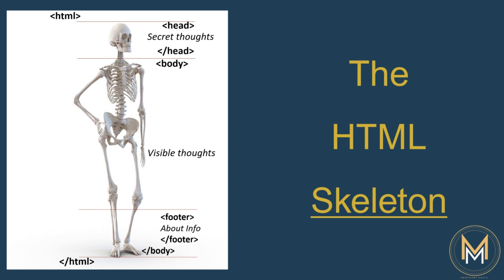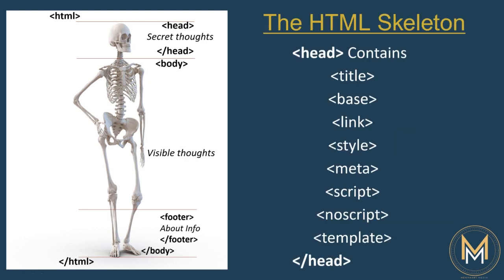So let's take a look at our skeleton. The skeleton has two main parts to it: one being a head section, one being a body section. In the body are stored all the visible parts on a web page, and in the head all the invisible parts. The head's content is not displayed on the page. Instead, the head's job is to contain metadata about the document.